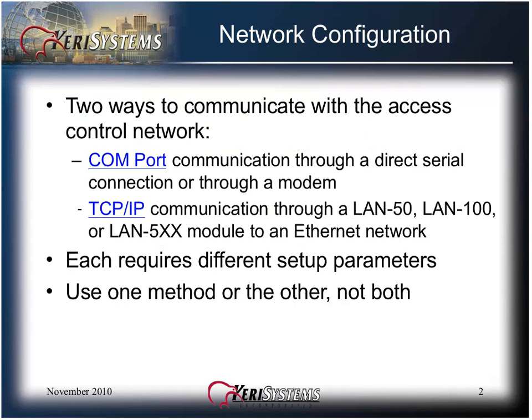There are two ways to communicate with the access control network: either through a COM port communication through direct serial connection or a modem, or TCP/IP communication using an Ethernet device connected to the local or wide area network. Each requires different setup parameters. Use one method of communication or the other, but not both.